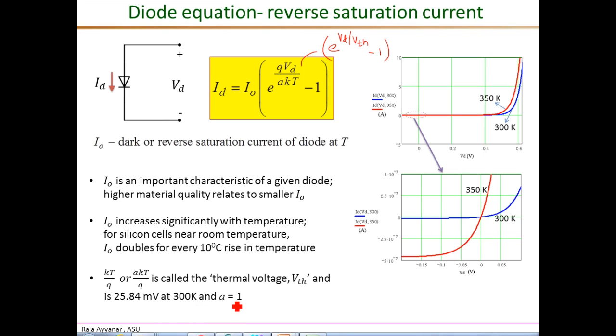From this equation, for diode voltages above this thermal voltage Vth of 25 millivolts, the exponential term dominates. For example, at 50-60 millivolts, this term can be close to 10 times higher than one, therefore the one can be negligible under most of our normal operating conditions for a PV cell.